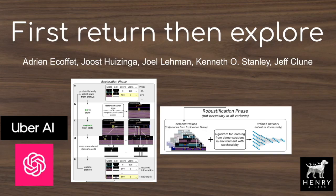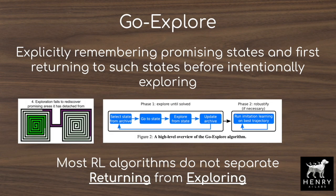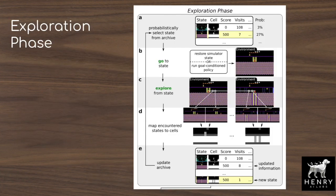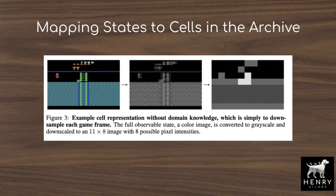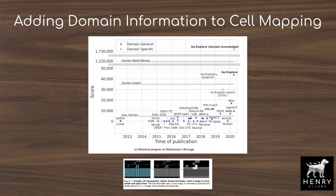This video will explain First Return, Then Explore from researchers at Uber AI and OpenAI. This is the latest development in the family of Go Explore algorithms. Go Explore is one of the most exciting algorithms in reinforcement learning, introducing a new way to think about exploring environments and returning to the frontier of explored states. The problem with most exploration algorithms is that by pursuing novelty, they forget how to return to the most promising state previously found. Go Explore explicitly stores these promising states to avoid this problem.